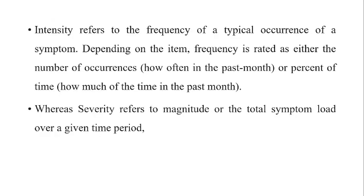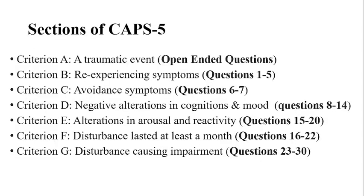Frequency refers to the typical occurrence of a PTSD symptom — how often it occurred. Depending on the item, frequency is rated as either the number of occurrences or the percent of time in the past month. Severity refers to the magnitude and overall load of the PTSD symptoms in a given time period. Here you can see we have a total of 30 items, and Criterion A, as mentioned, is open-ended.